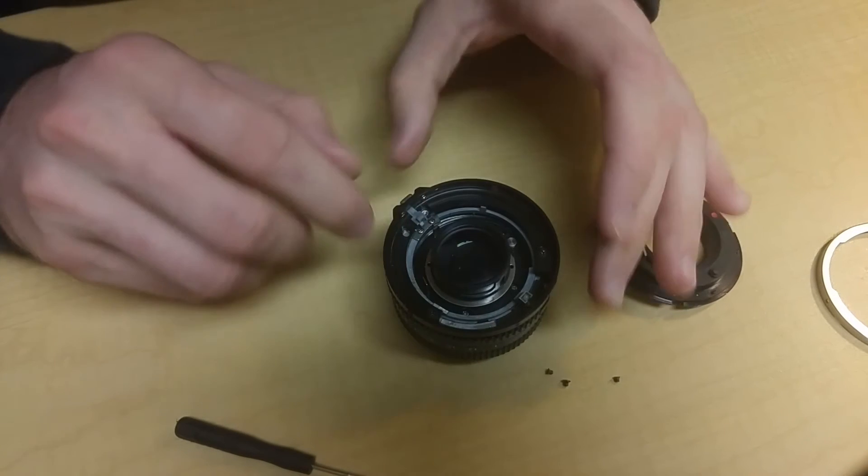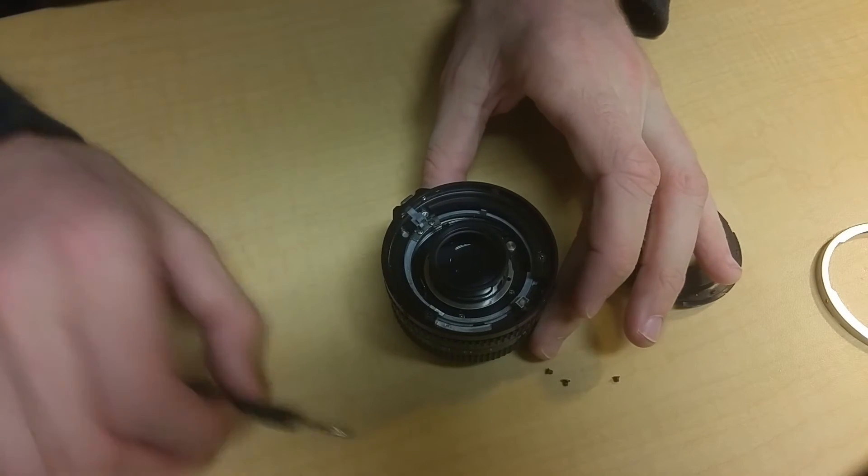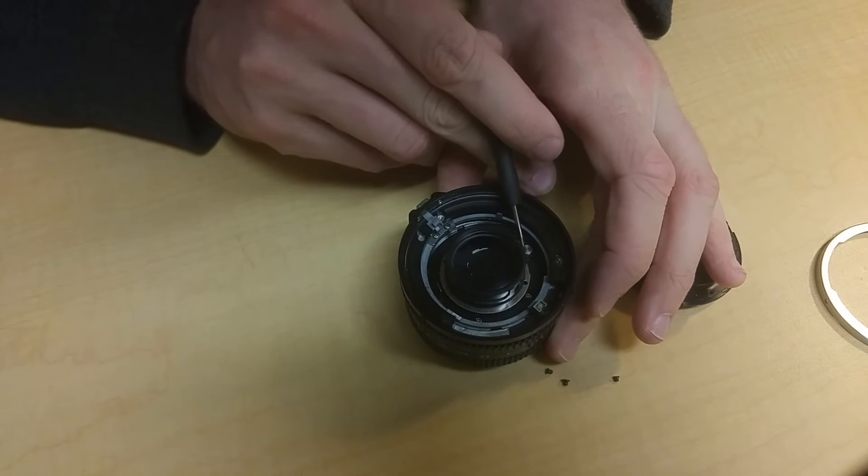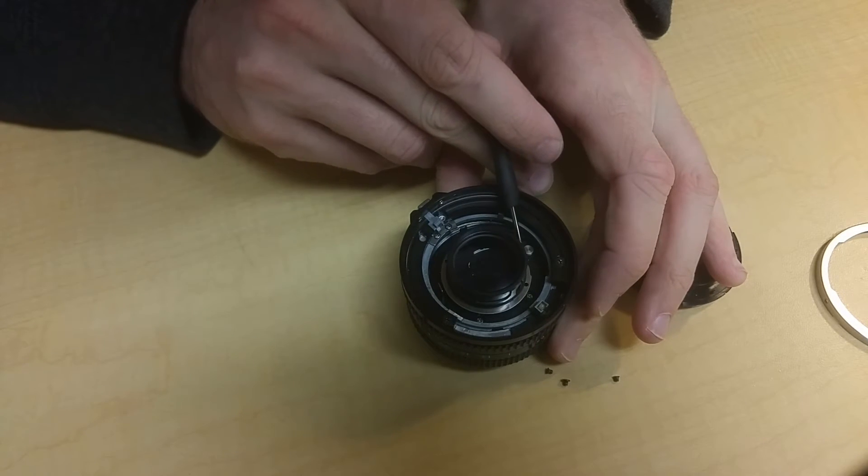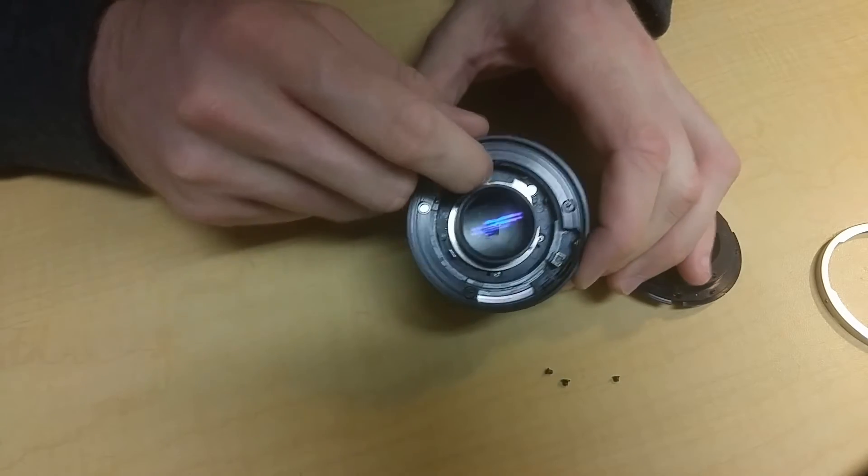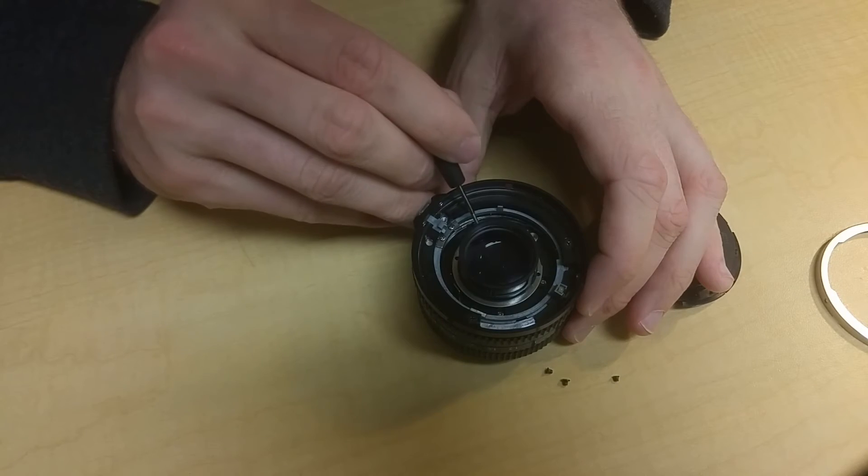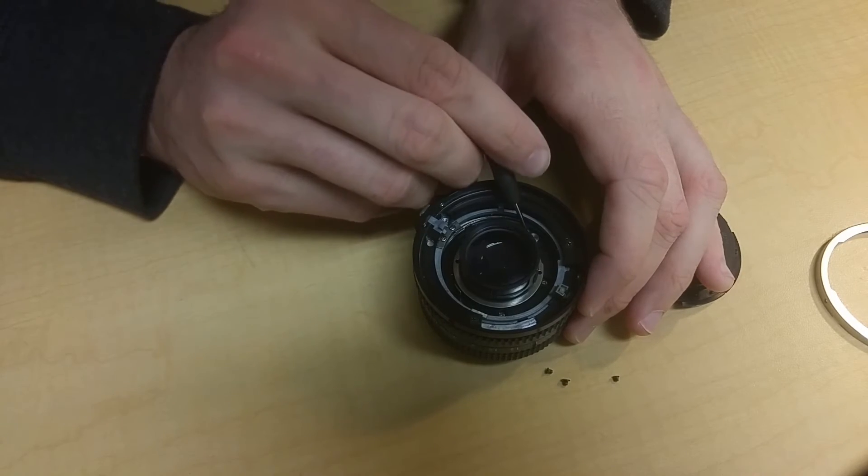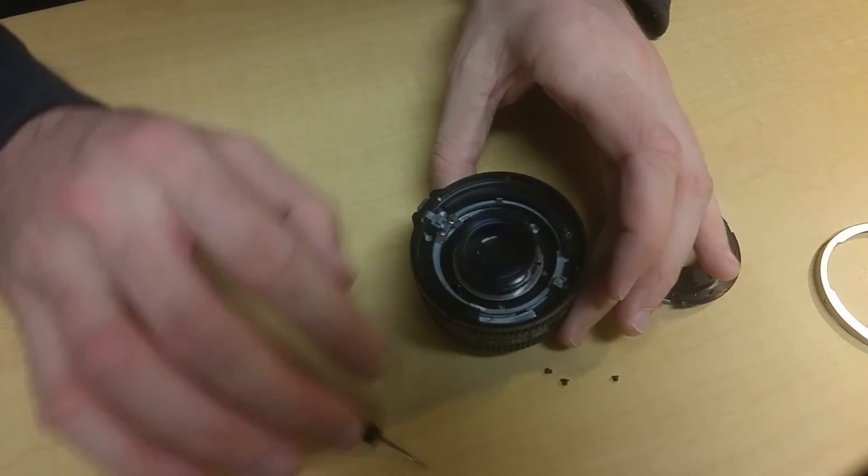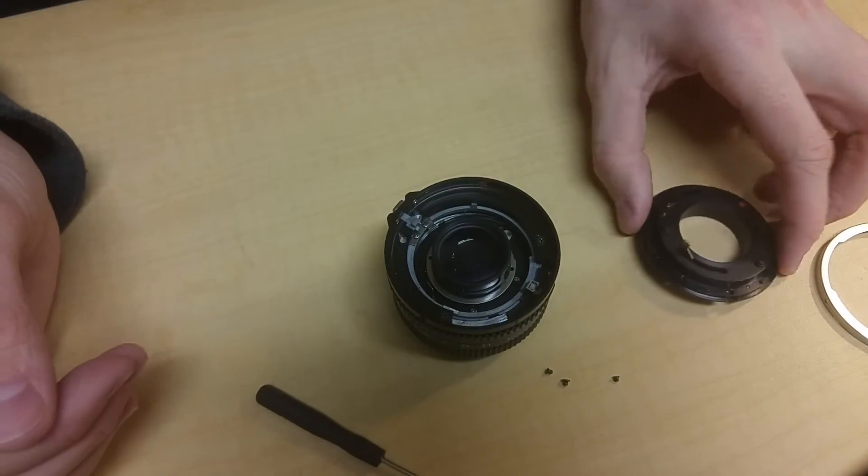And then you want to set this so that it's at minimum aperture right there, because this is the aperture control, as you can see. So you want to set it so that's at minimum aperture—that'd be about right there. So you also want to set it so it's at 22, minimum aperture.